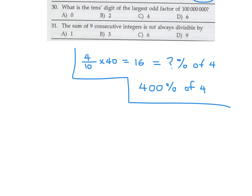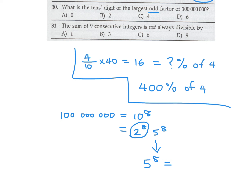What is the tens digit of the largest odd factor of 100 million? 100 million equals 10 to the 8th, which is 2 to the 8th times 5 to the 8th. To get the largest odd factor, remove all powers of 2, leaving 5 to the 8th. Expanding 5 to the 8th gives 390625. The tens digit is 2, so number 30 is B.